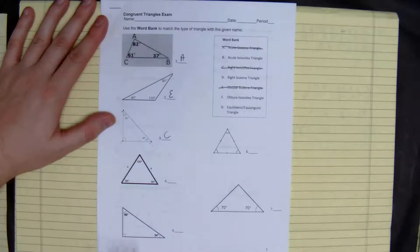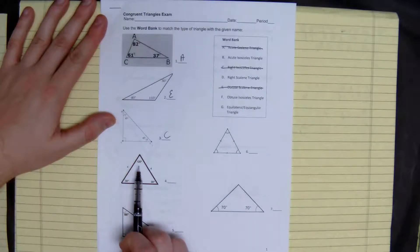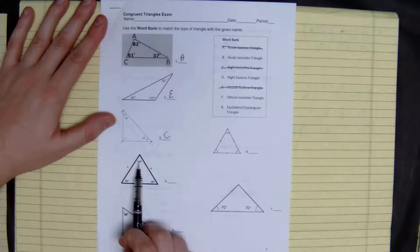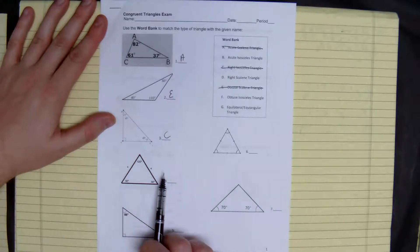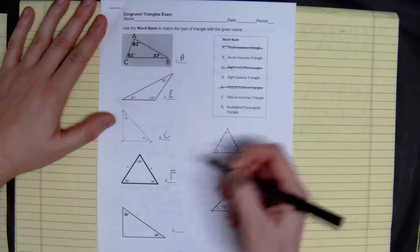Right here, we have an obtuse angle with two of the same sides and angles. Therefore, we have an obtuse isosceles triangle.